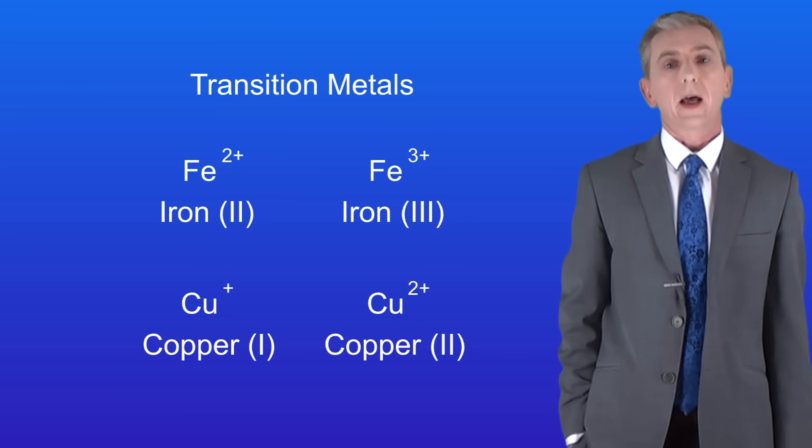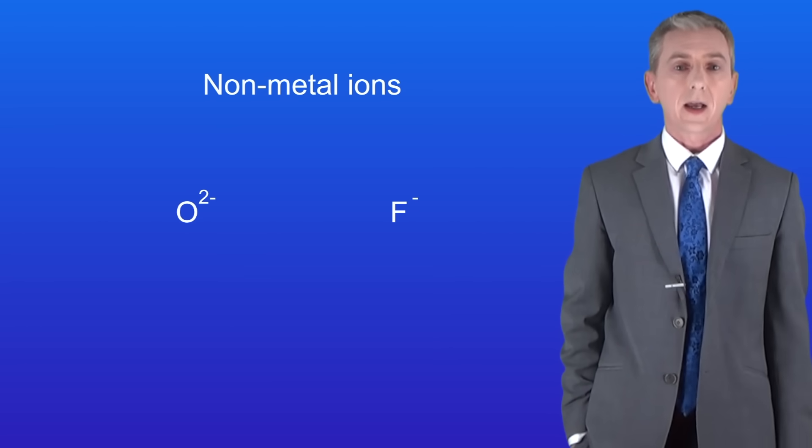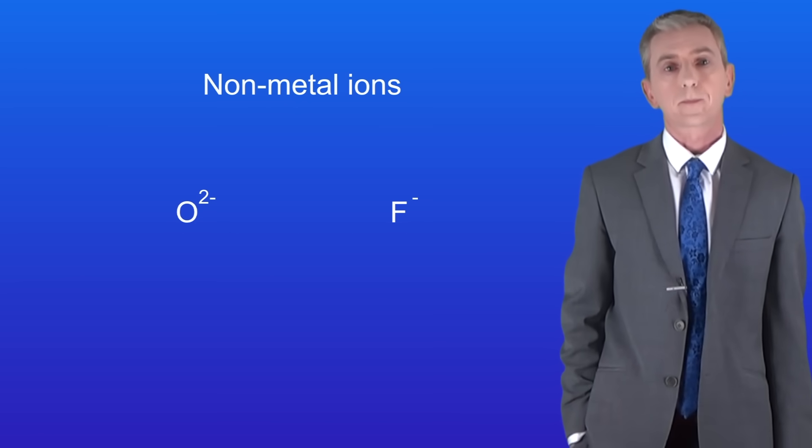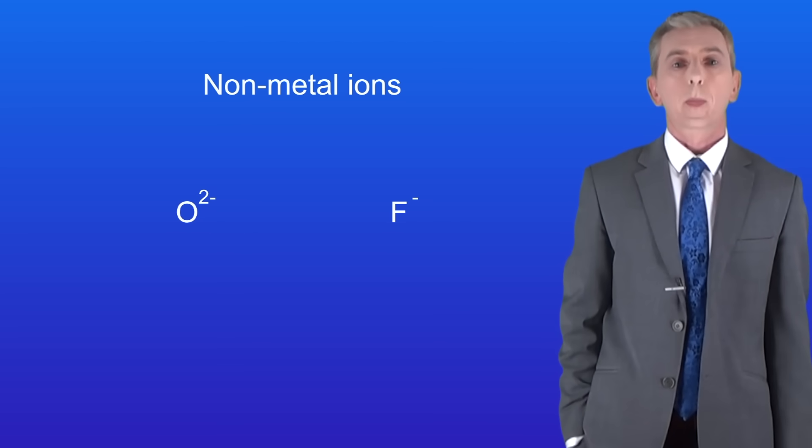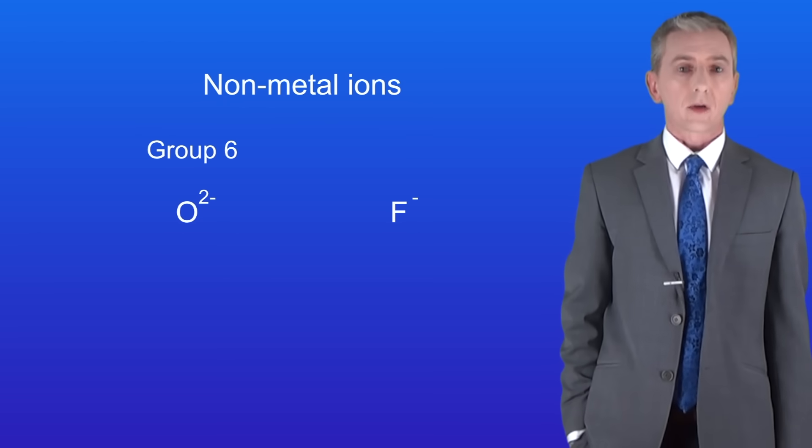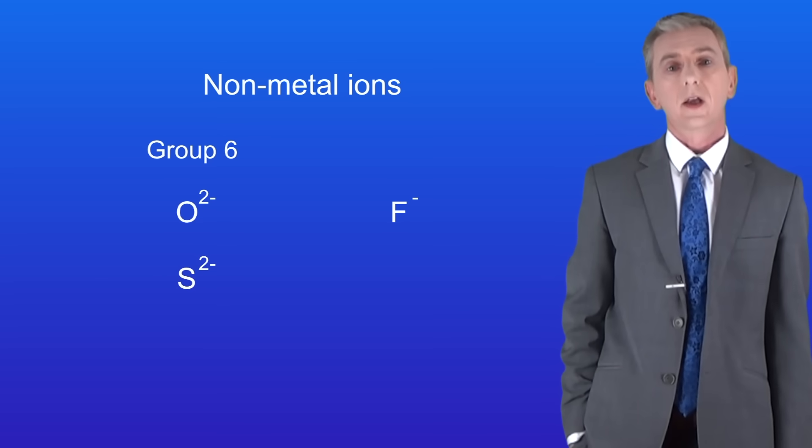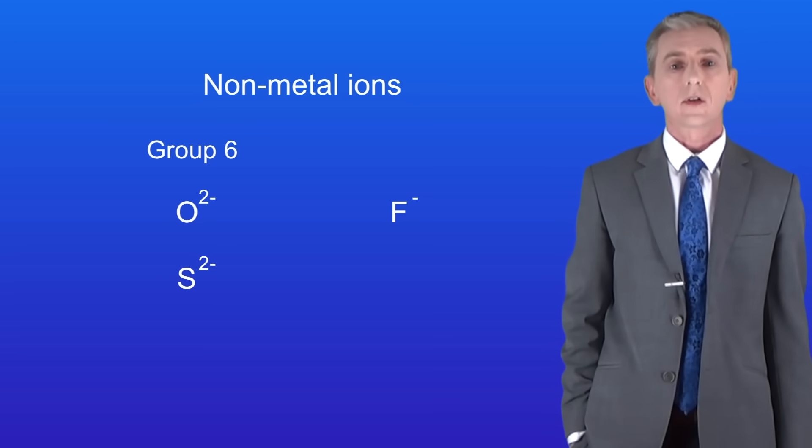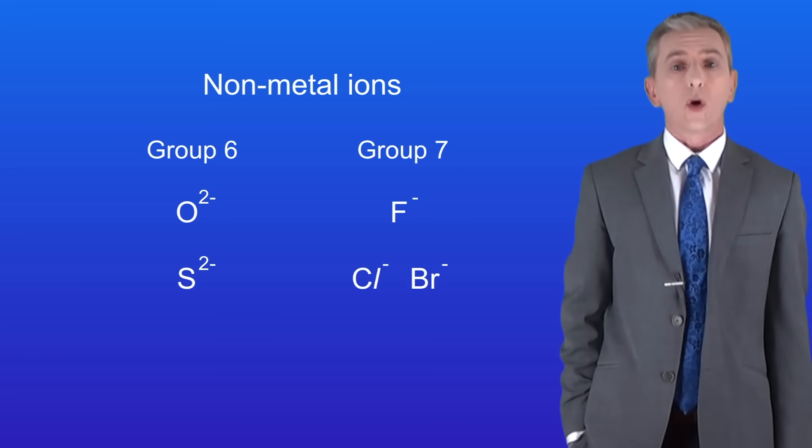Let's take a look now at non-metal ions and I'm showing you two non-metal ions here. We've got the oxide ion O2- and the fluoride ion F-. Now just like with metal ions, we can relate these to their groups in the periodic table. Oxygen is in group 6 and forms a 2- ion. So does sulfur which is also in group 6. This forms the sulfide ion S2-. Fluorine is in group 7 and this forms the 1- fluoride ion. Chlorine and bromine are also in group 7 and they also form 1- ions.